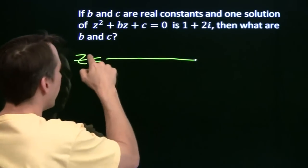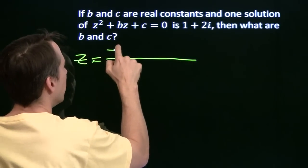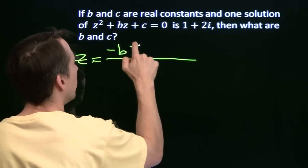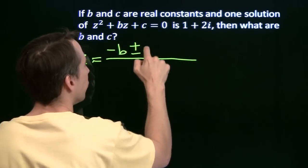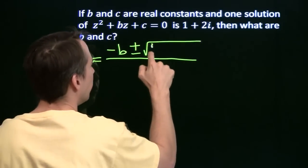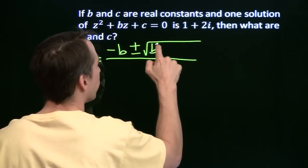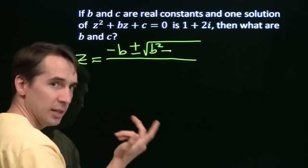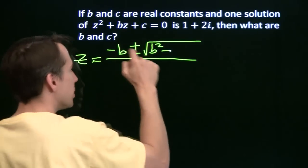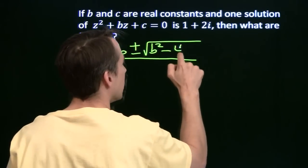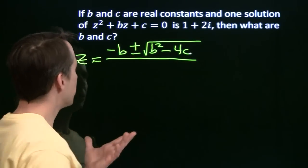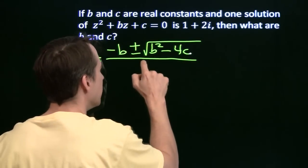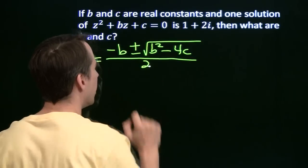Applying the quadratic formula here, we'll get z equals negative b plus or minus the square root of b squared minus 4 times a — in this case a is 1 — times c. The denominator is 2 times a, and a is still 1, so it's divided by 2.